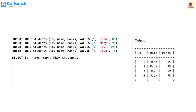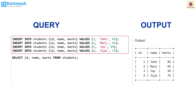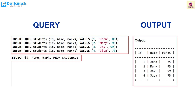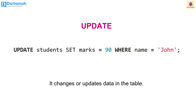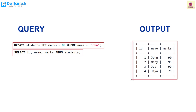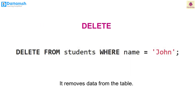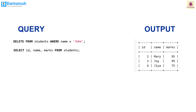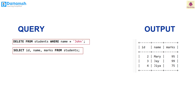INSERT: this query adds rows of data — ids, names, and marks of four students — to the table. With the help of the SELECT query, we can see the output of the mentioned columns: id, name, marks from the students table. UPDATE: this changes or updates data in the table. This query changes John's marks to 90 in the students table.